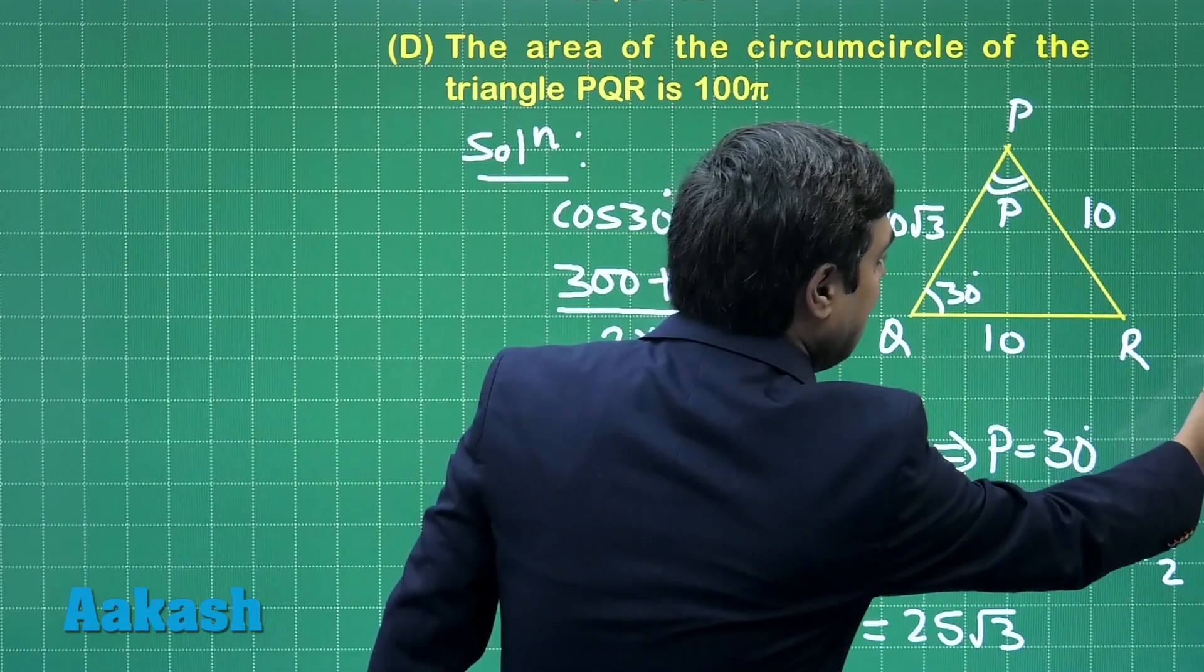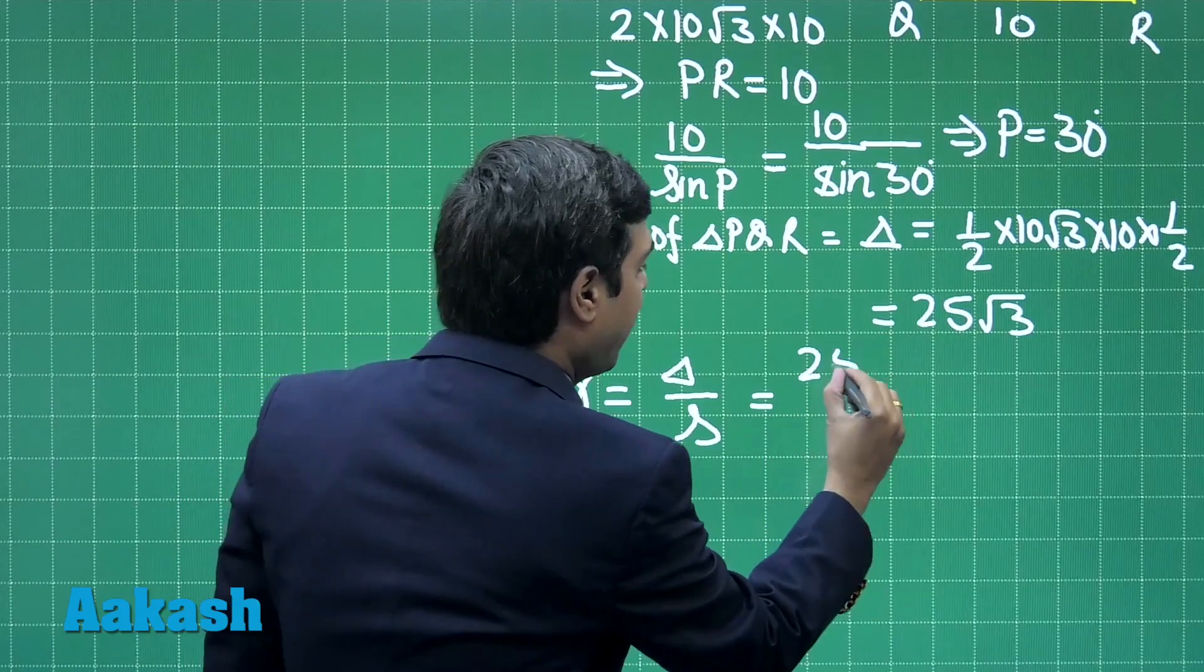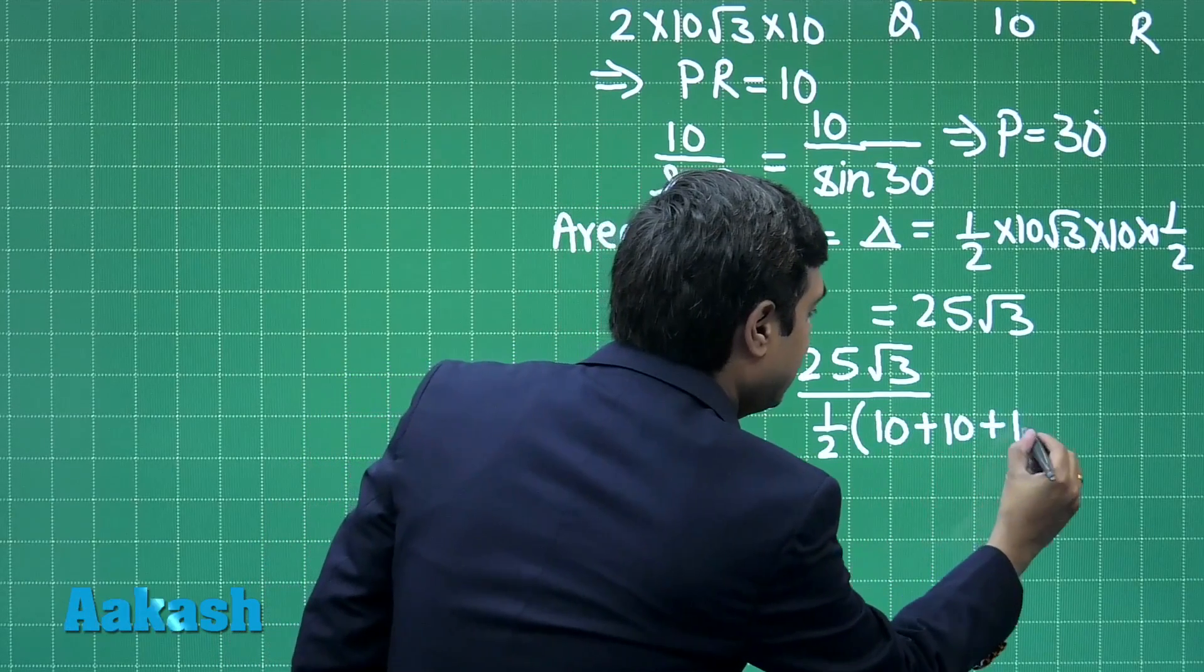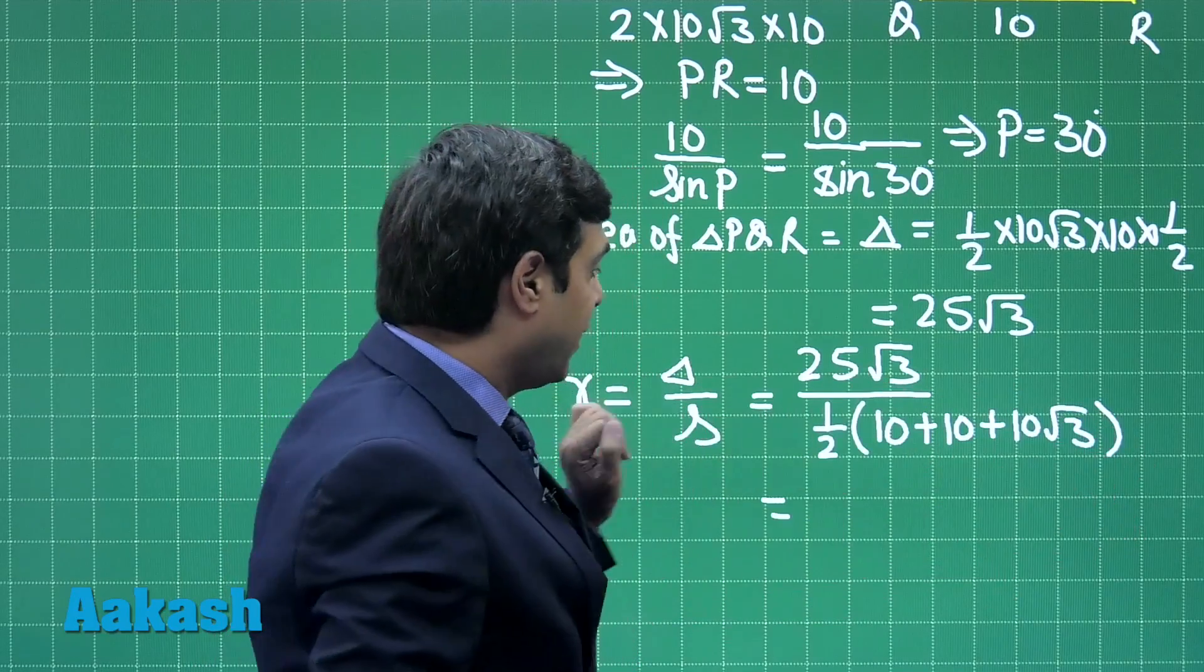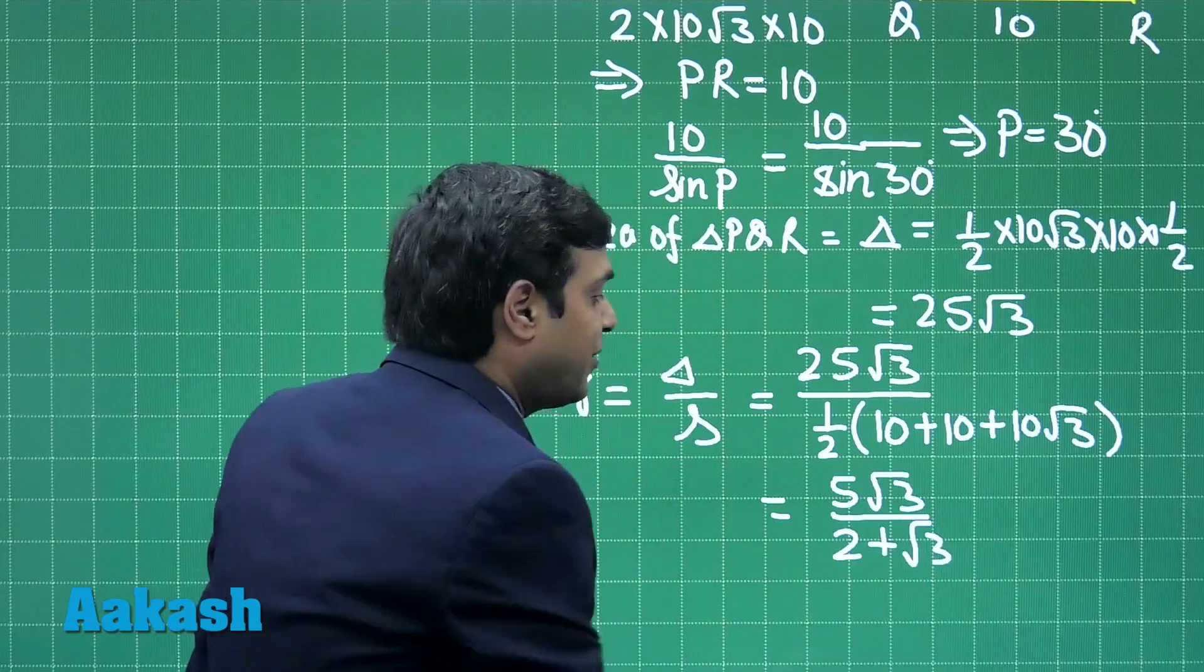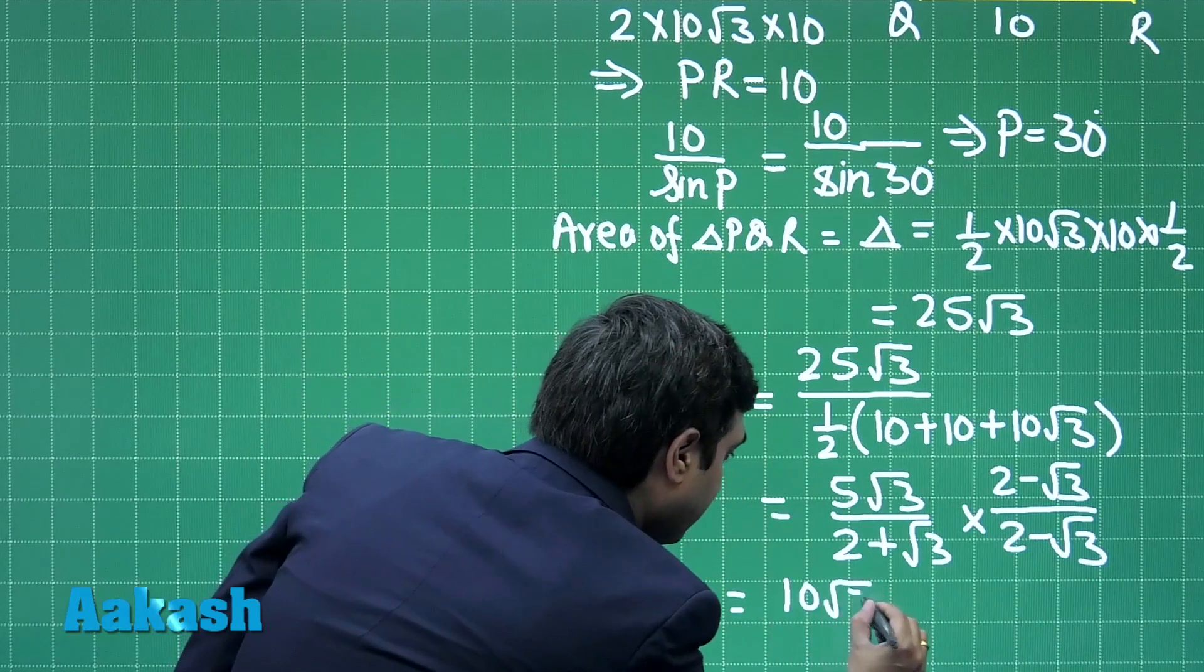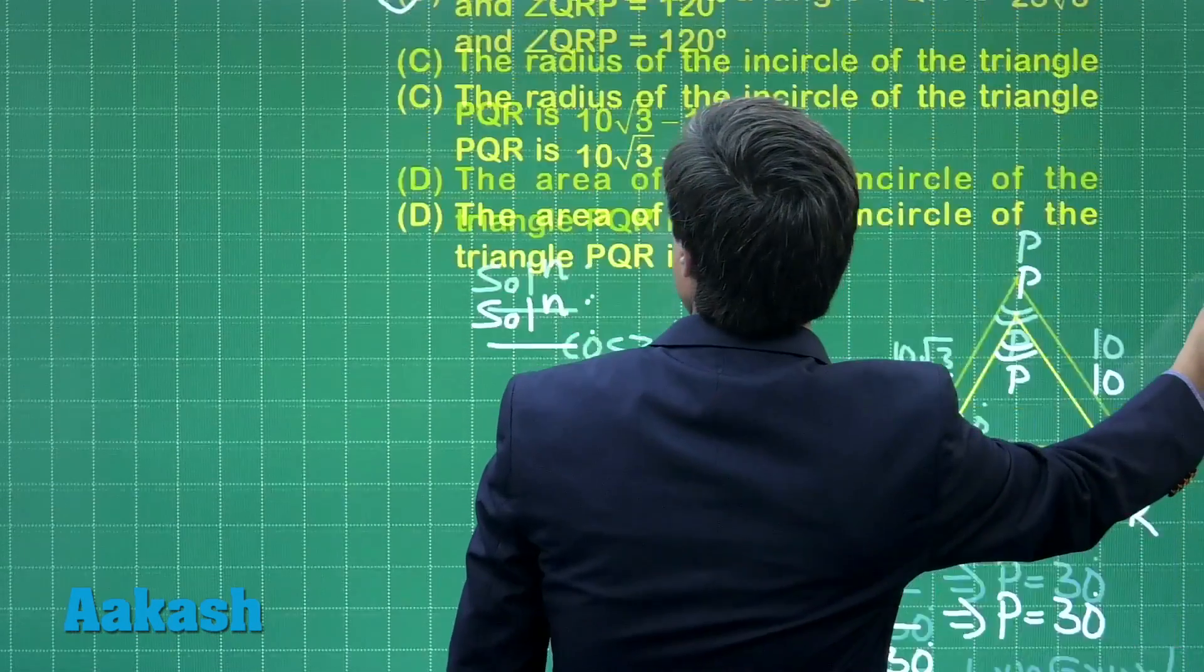Next we have to find inradius. Inradius meaning small r is delta upon s. Delta we obtained as 25 root 3 while s, that is semi perimeter of the triangle, that is we can find as 1 by 2 of 10 plus 10 plus 10 root 3, correct. Simplifying we get this is simply 20 plus 10 root 3, we can take 10 common. It gives us 5 root 3 divided by 2 plus root 3. Rationalize this term 2 minus root 3, multiplying and dividing we get this term denominator becomes 1 and the numerator is 10 root 3 minus 15.